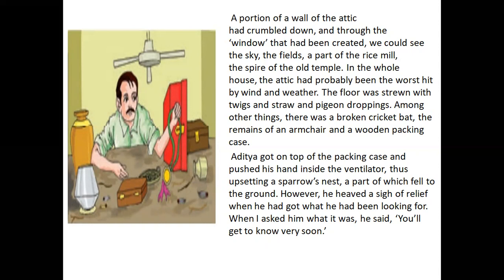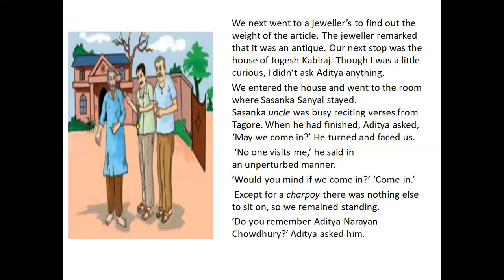The narrator asked what Aditya was doing, and he said to wait — the narrator would come to know soon. Aditya found a medal hidden there. They went to a jeweller who said it was an antique piece and gave 150 rupees for it. Getting that money, they then went to Jogesh Kabiraj's house.